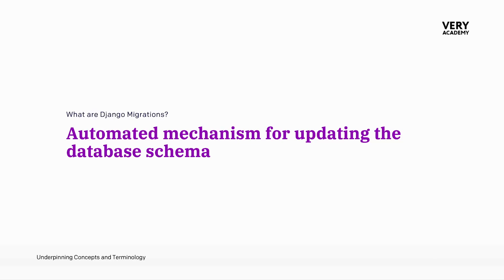Django migrations are an automated mechanism for updating the database schema, and as we have already seen, it is used to reflect the changes in our Django models. To summarise, Django migrations automate the process of updating the database to align with changes in our Django models, contributing to a seamless and organised database evolution.